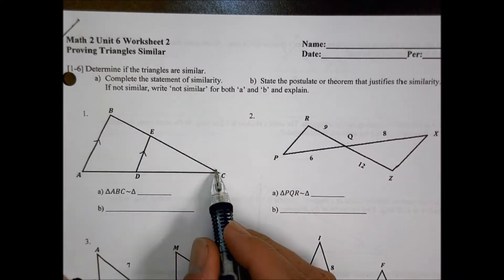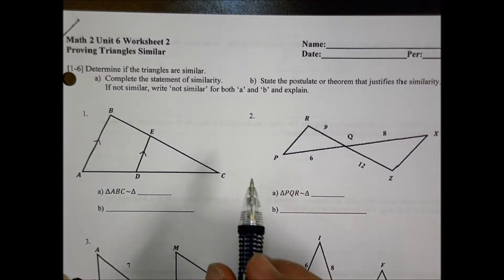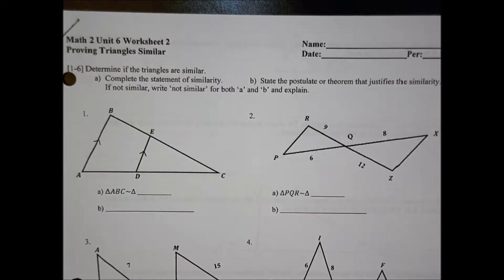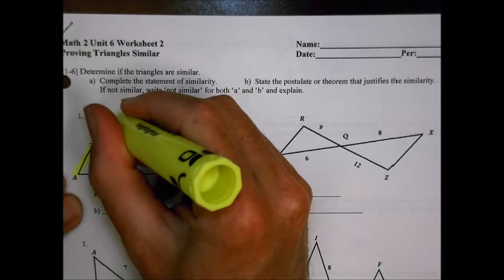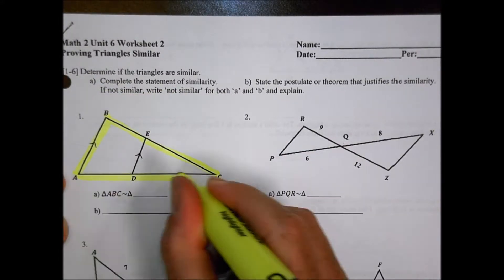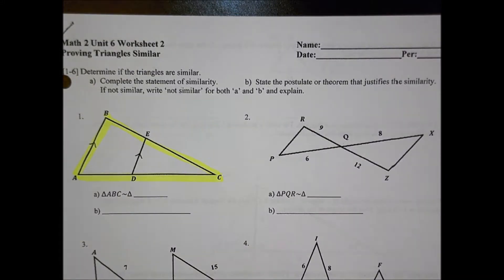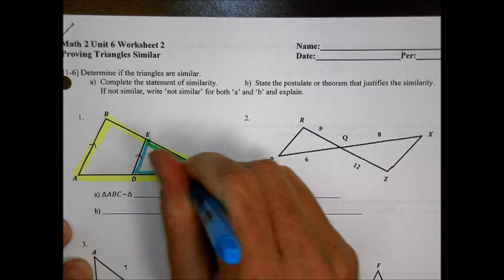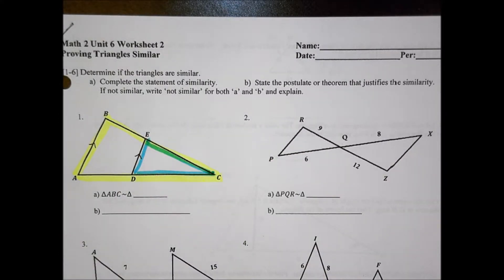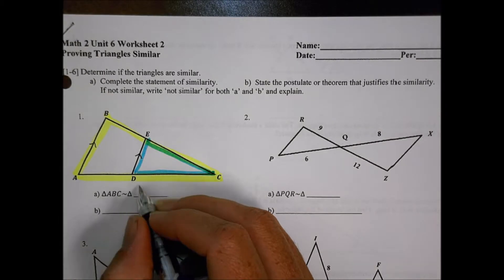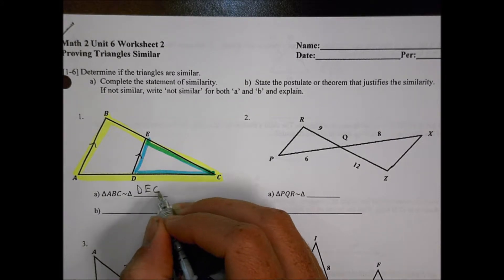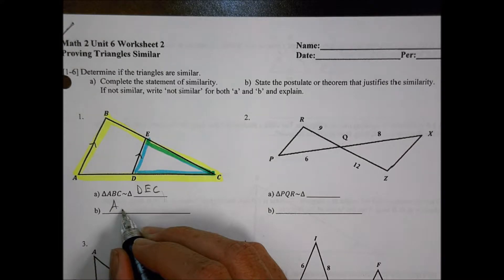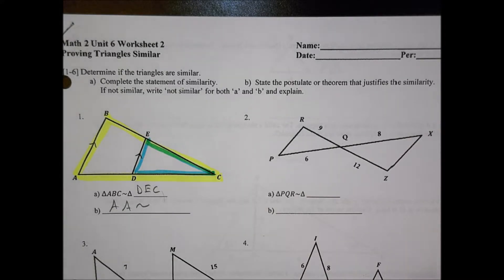Alright, so here we have A, B, and C, and you want to see what that one is going to be similar to. In our situation, we can say that here's our big one, A, B, and C. That's our triangle. And then inside of that, because these are two parallel lines, we can say that this one is going to be similar to it as well.